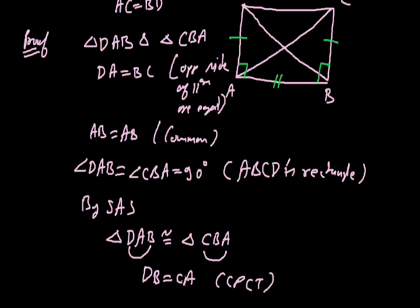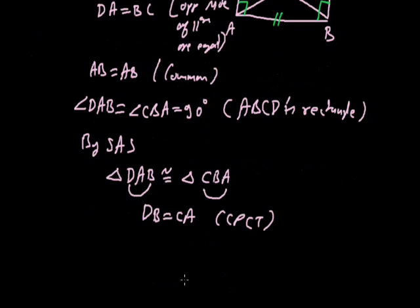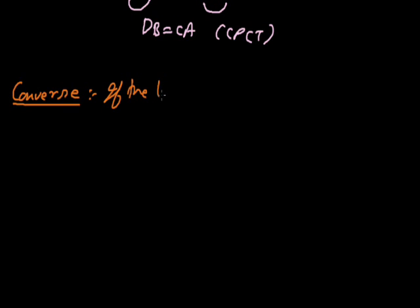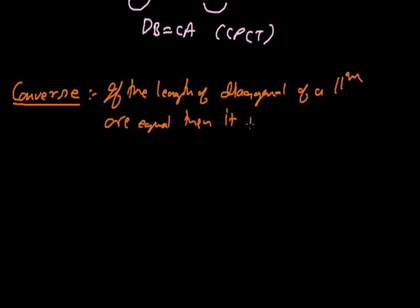So this way we can prove that rectangle diagonal length is equal. Now we see the converse of this statement. The converse is: if the diagonals of a parallelogram are equal, then the given parallelogram is a rectangle.